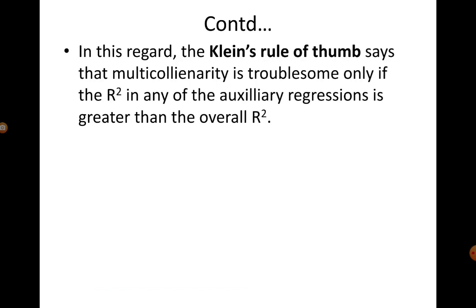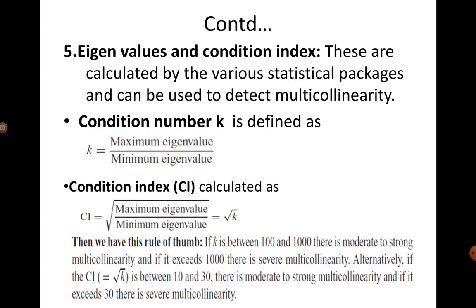Regarding auxiliary regressions, there is Klein's rule of thumb, which says multicollinearity may be present but will be troublesome only if the R² of any auxiliary regression is greater than the overall main model's R². If an auxiliary regression has an R² greater than your actual model's R², you can conclude that the multicollinearity is quite severe.